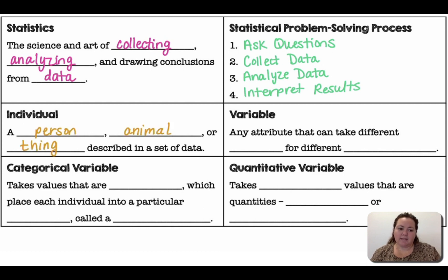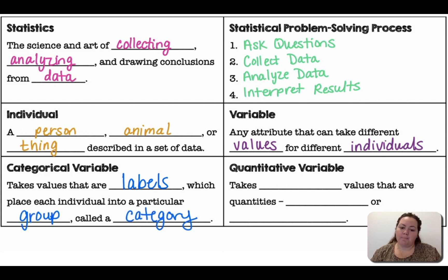Individual is a person, animal, or thing described in a data set. The variable is any attribute that can take different values for different individuals. Categorical variables take on values that are labels, which place each individual into a particular group called a category. Quantitative variables take number values that are quantities, so they are counts or numerical values. For a quantitative variable, it would make sense to calculate the average.